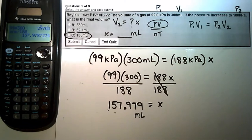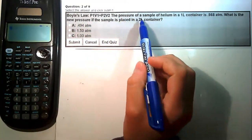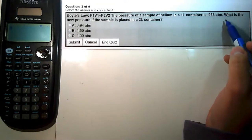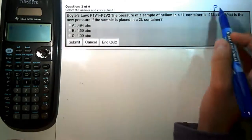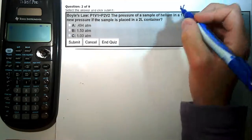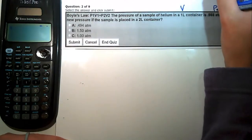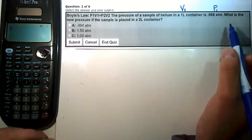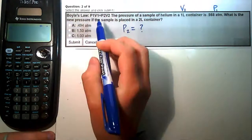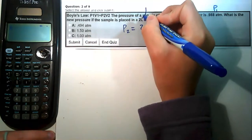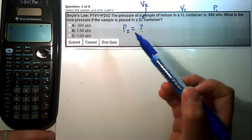The next question is also a Boyle's law question. The pressure of a sample of helium in a one-liter container is 0.988 atm. ATM is a unit of pressure and liters is a unit of volume, so P1 = 0.988 atm and V1 = 1 liter. We're asked for the new pressure P2 when the sample is placed in a two-liter container, making V2 = 2 liters.